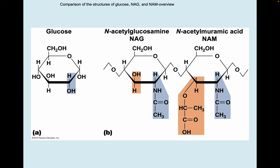The structures for NAG and NAM are very similar chemically to glucose. Glucose is a ring structure, and it's the same basic ring structure that NAG and NAM have. What changes in NAG is that the hydroxyl group in glucose is replaced with glucosamine. For NAM, we take N-acetylglucosamine and change out the hydroxyl group for the muramic acid part. So they alternate in this fashion: NAG, NAM, NAG, NAM, and so on.